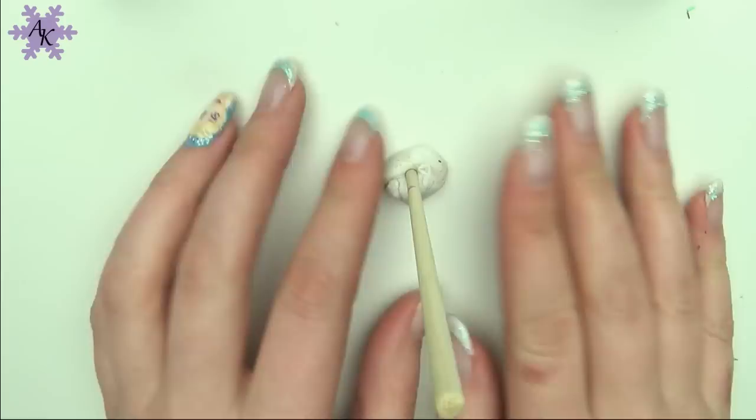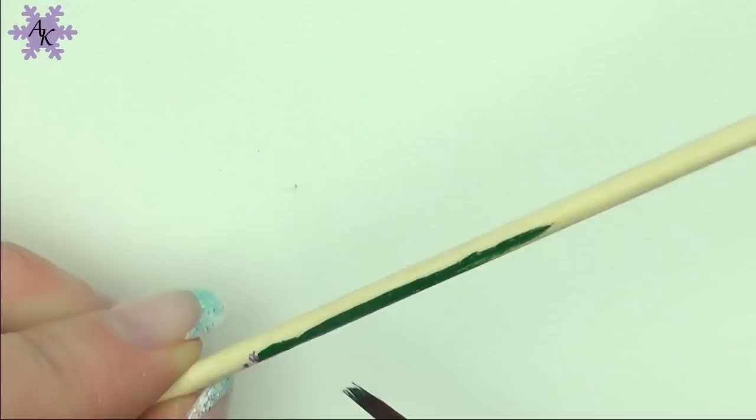For the base you need a thin stick. I put mine in a lump of sticky tack so it could stand by itself. First off, paint the wood green with acrylic paint.